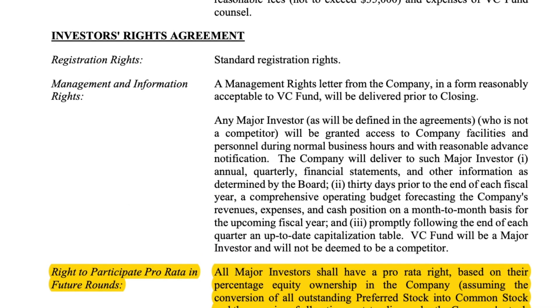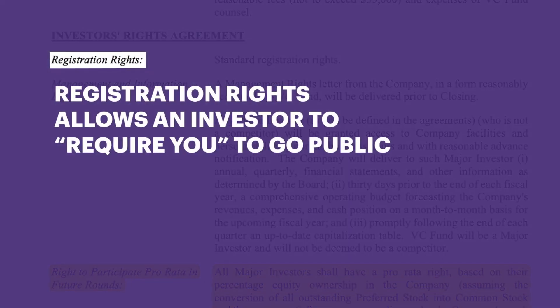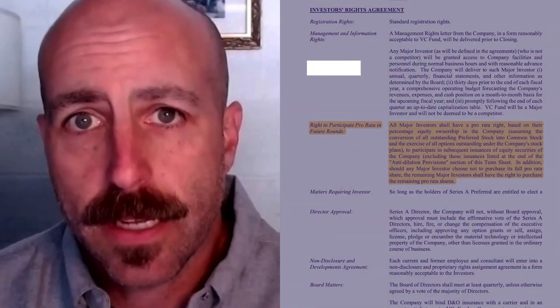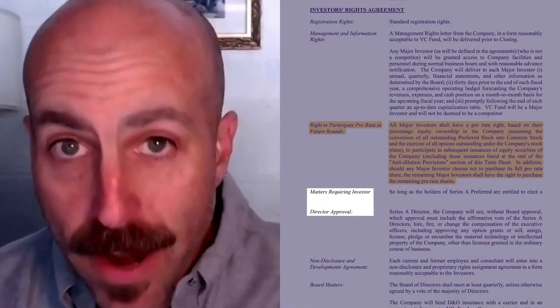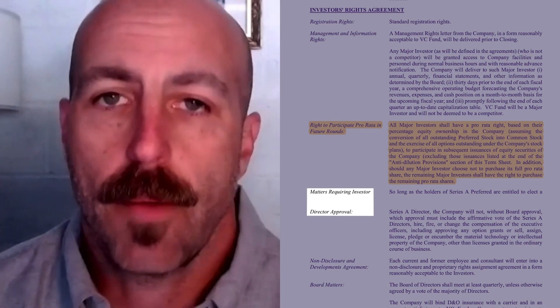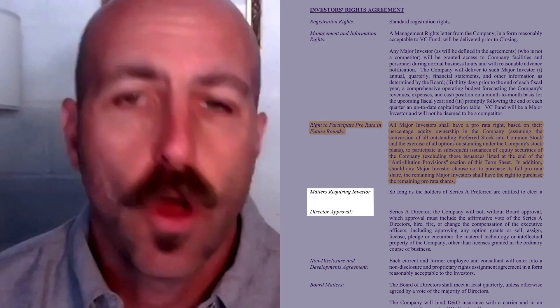The rest of the Investor's Rights Agreement includes things like registration rights, which are pretty irrelevant — almost a relic of a prior time when many more companies were going public. There's also a possibility you'll see an extended list of actions the company can't take without your investor director's approval. We try to eliminate that section when negotiating Series A term sheets.